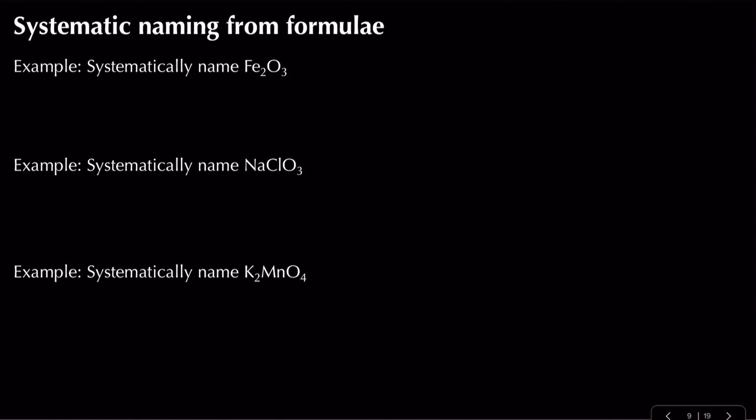You would probably just see this and think 'iron oxide,' but that's not enough because you can actually get two versions of iron oxide: you can get Fe2O3 or you could get FeO.